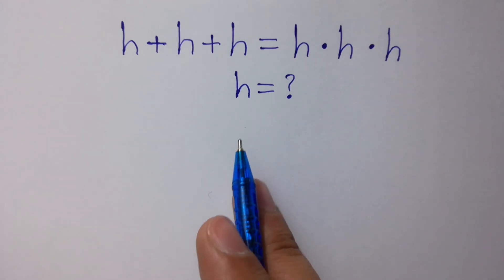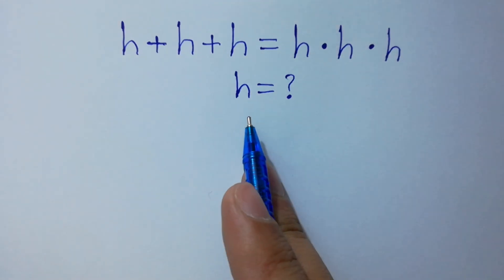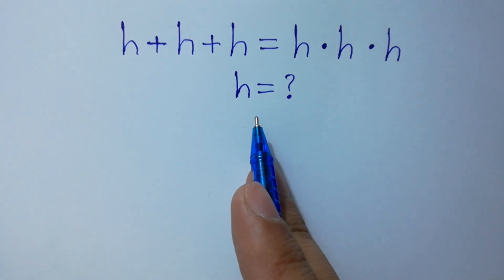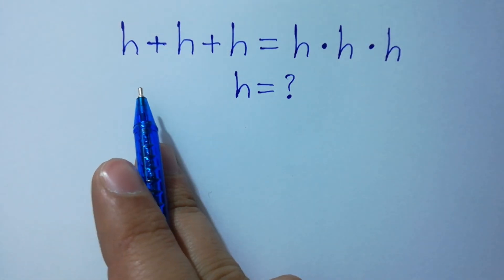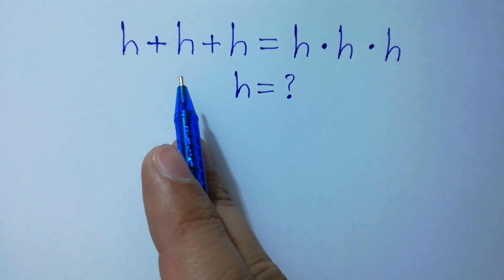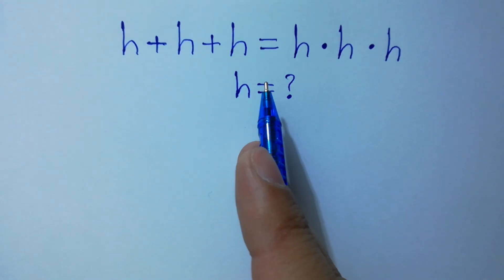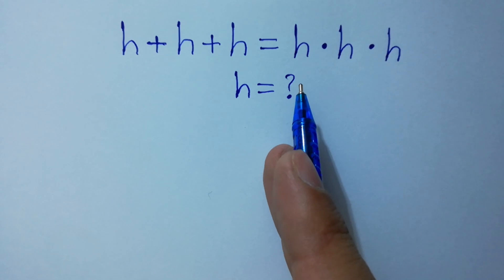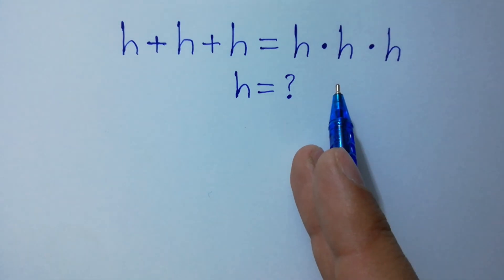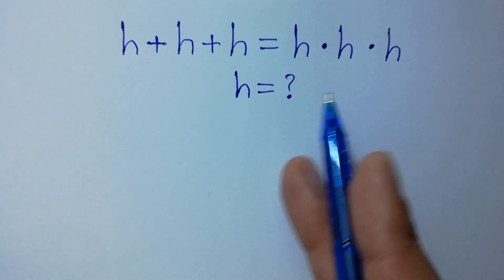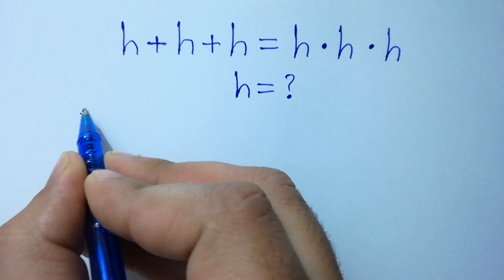Hello friends. Find the value of h if h plus h plus h equals h times h times h. Let's have a solution.